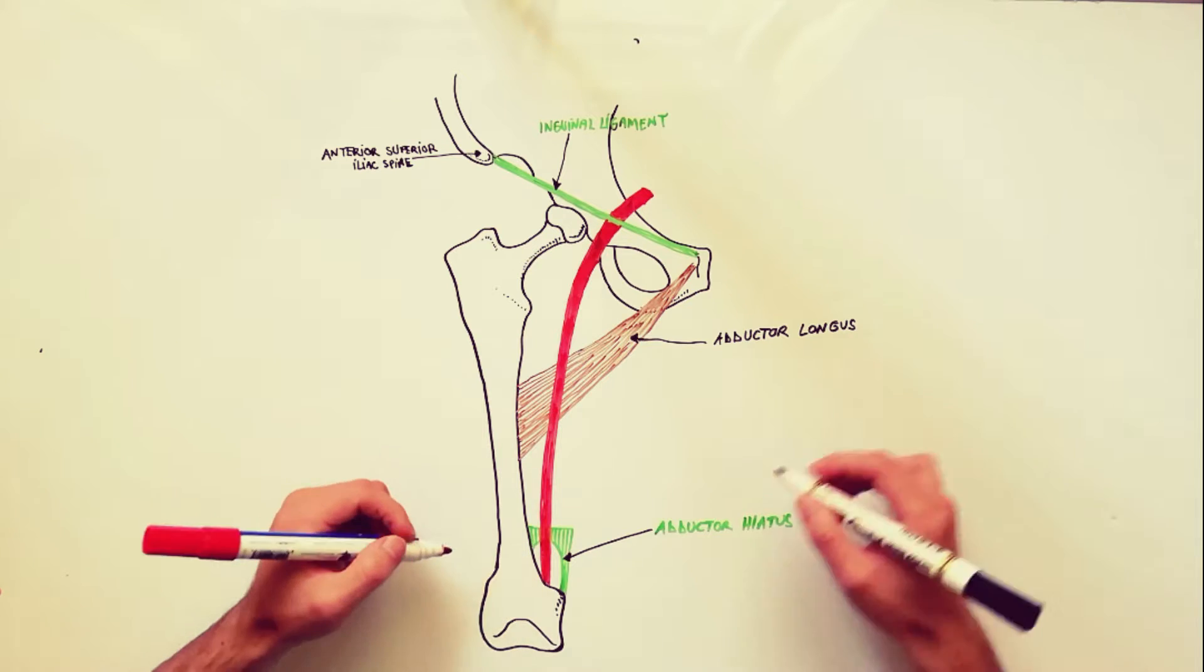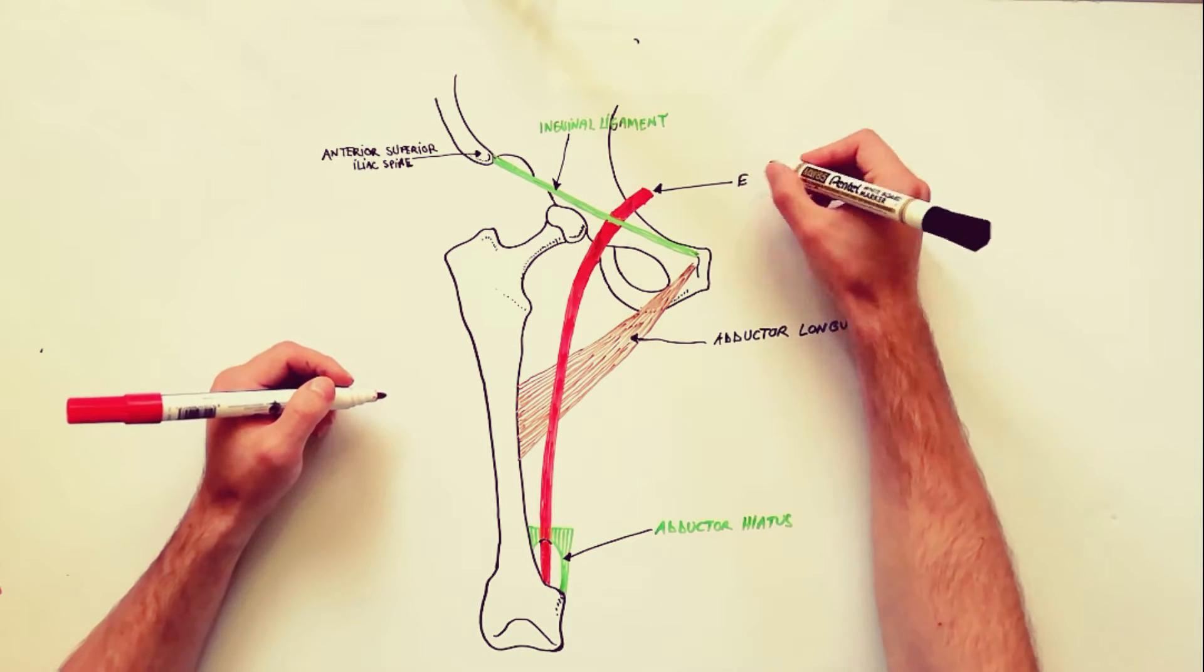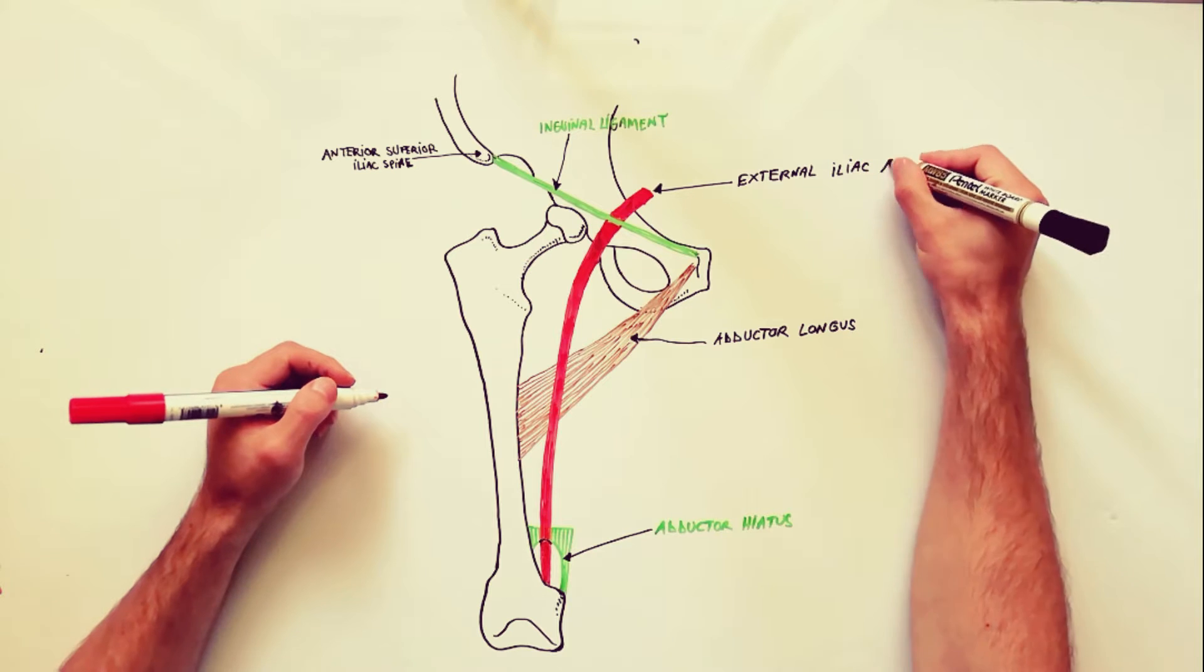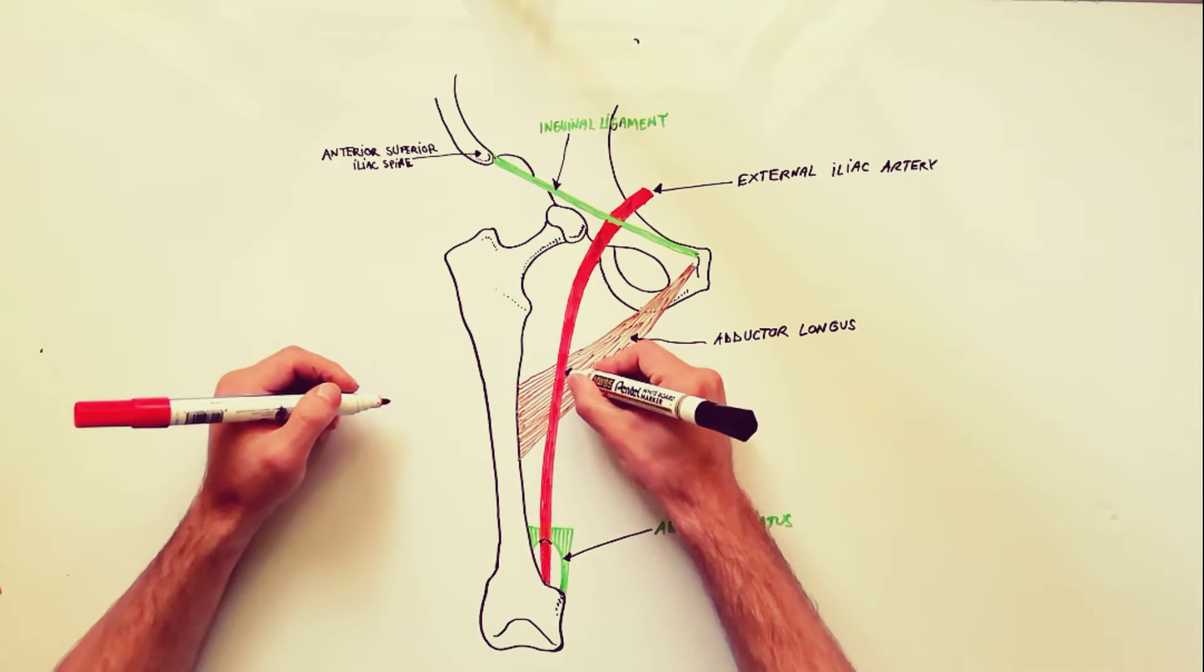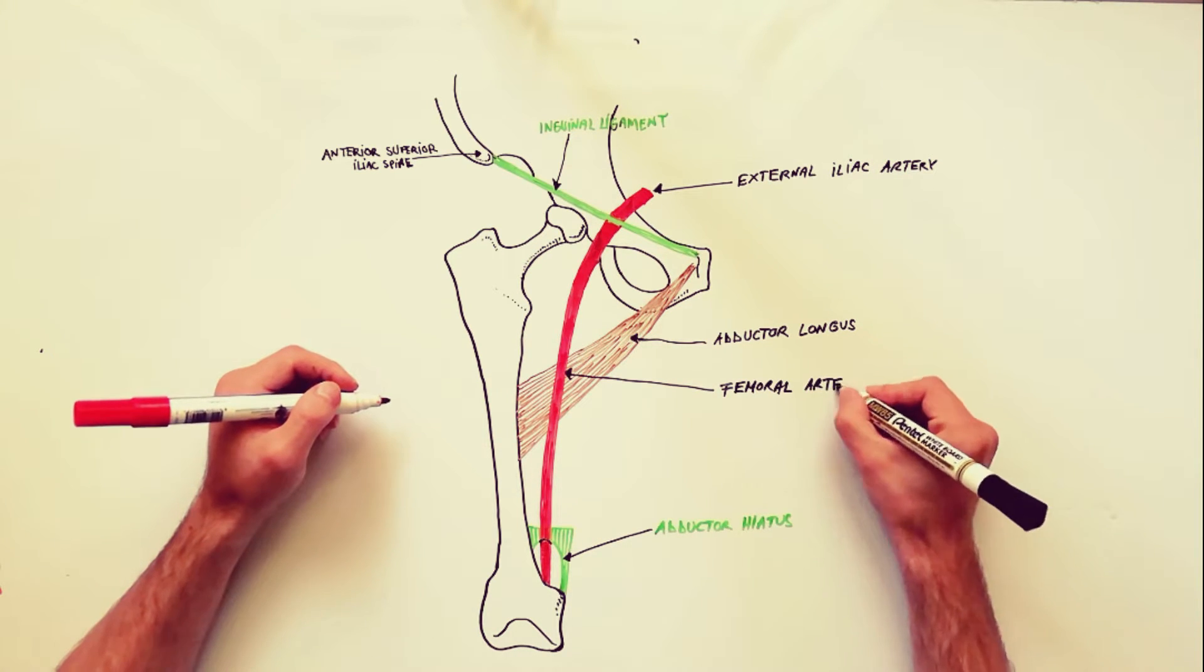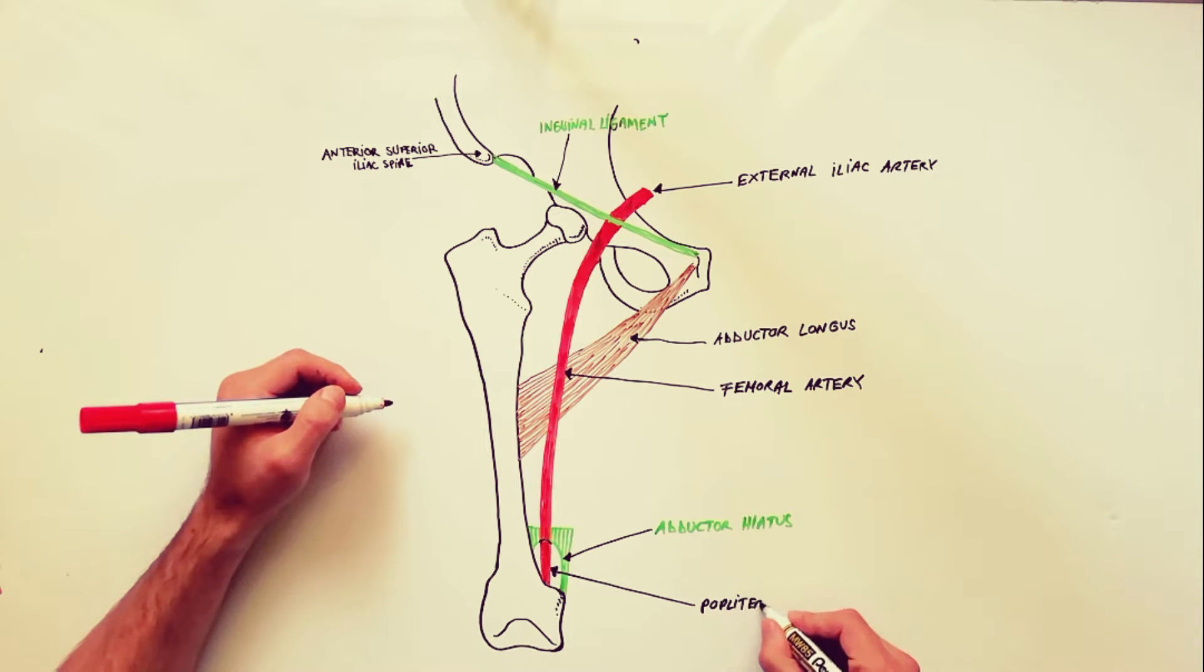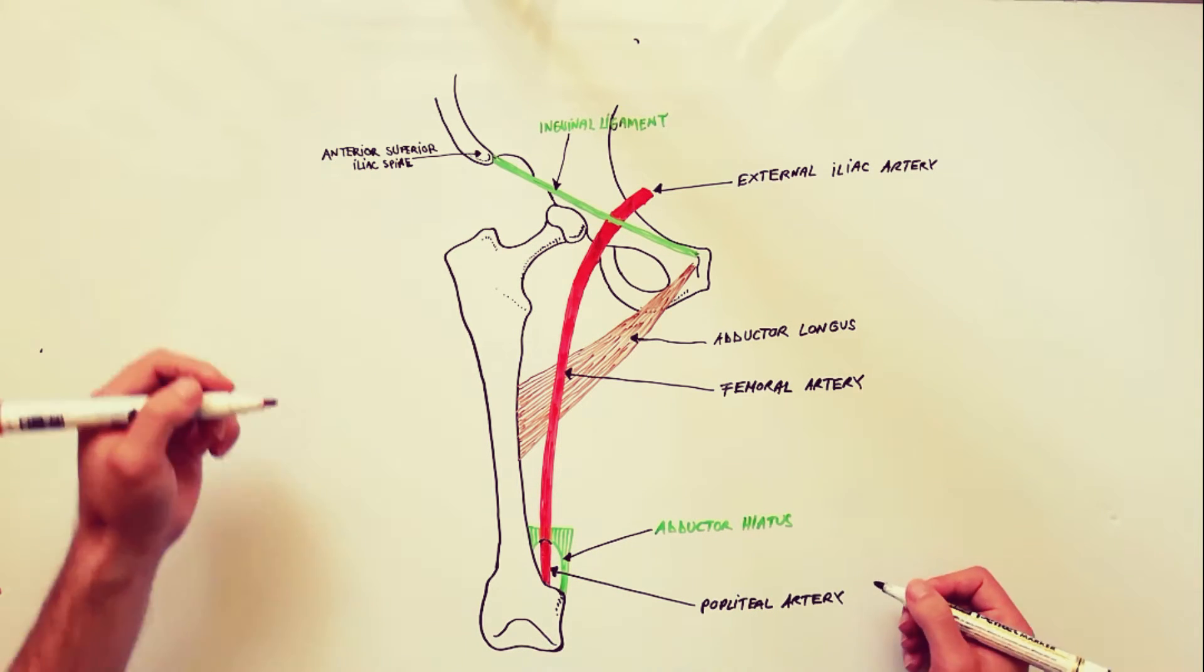Here it lies midway between the anterior iliac spine and the symphysis pubis. The femoral artery ends at the level of the adductor hiatus, from which point it becomes continuous with the popliteal artery.